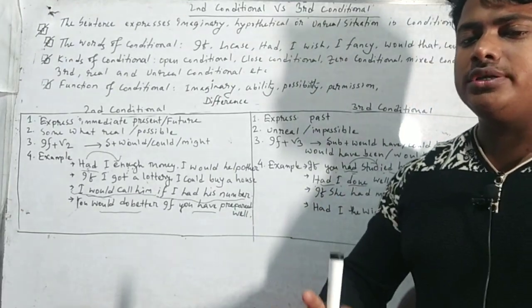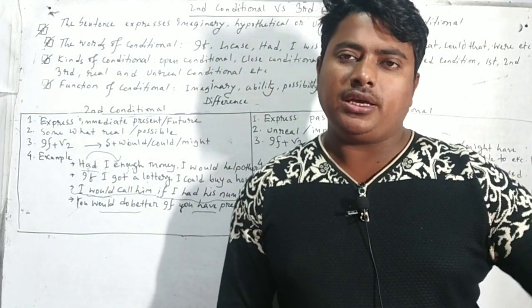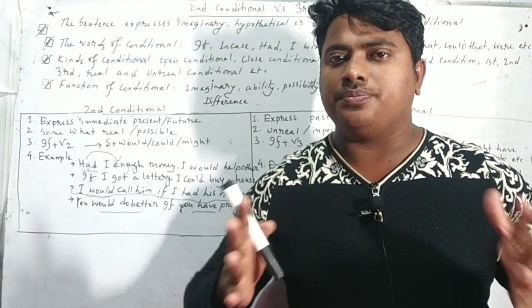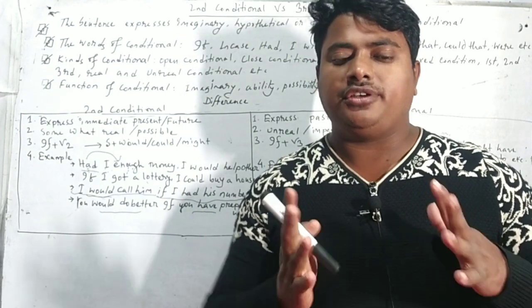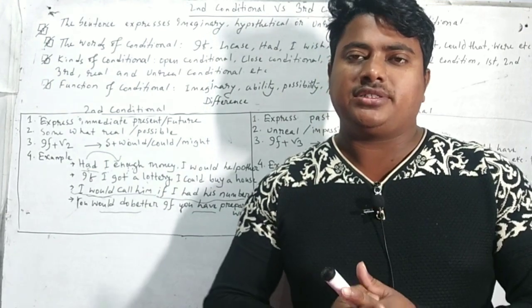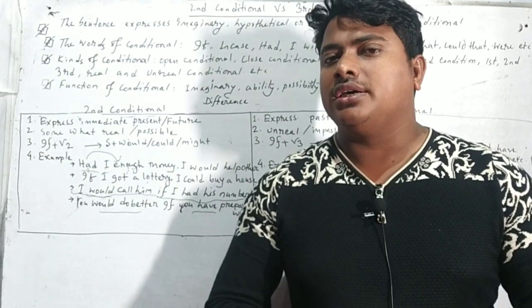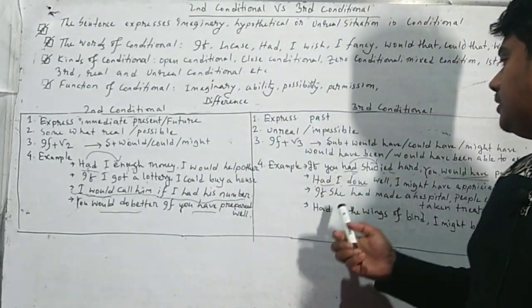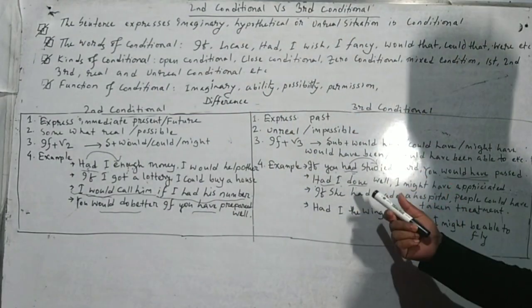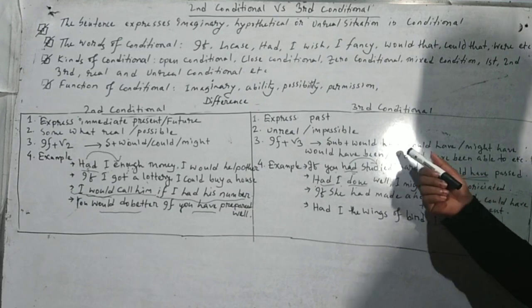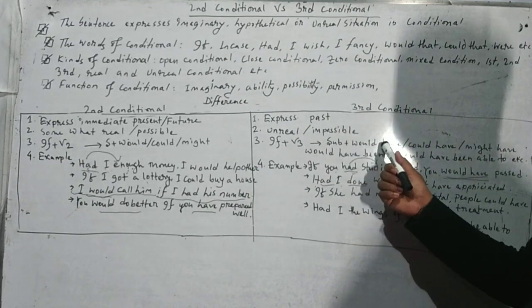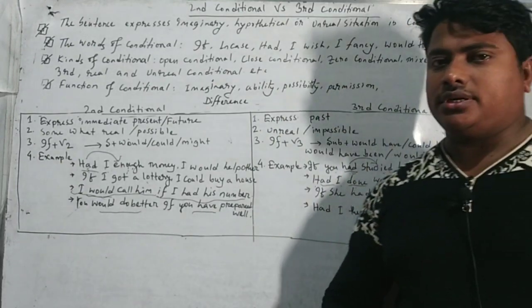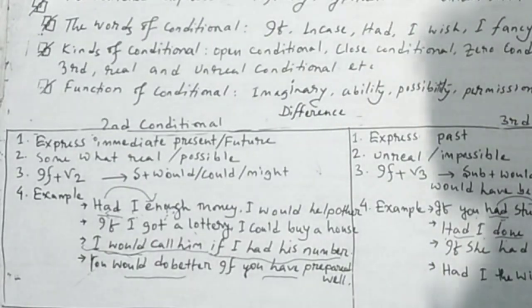Then finally the structure. What is the basic difference? If clause always will be past perfect, or had plus V3, first clause. If clause takes subject plus had plus V3, then it will be past perfect. Then second part, we have to use subject would have, might have, would have been, would have been able to, etc.